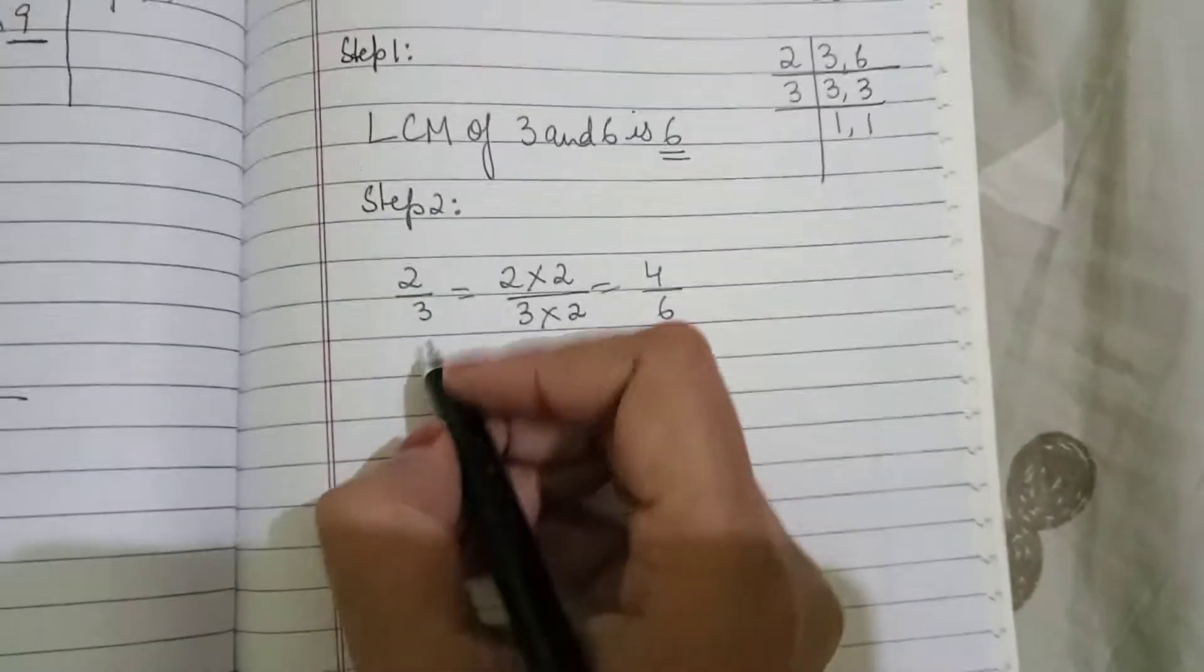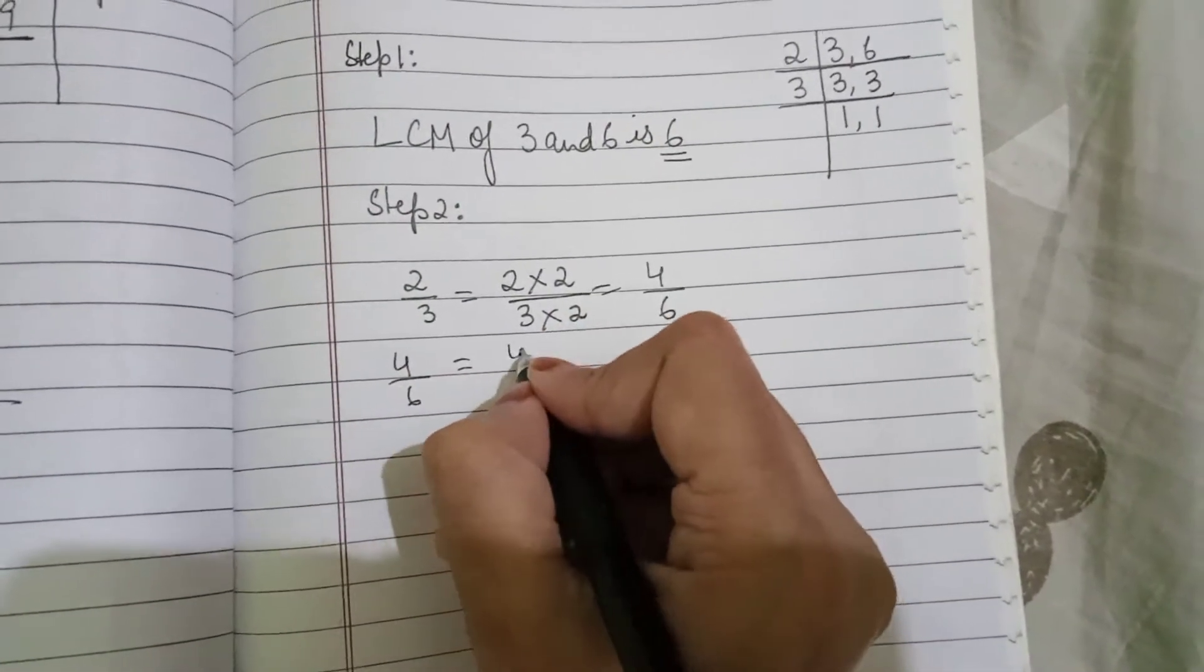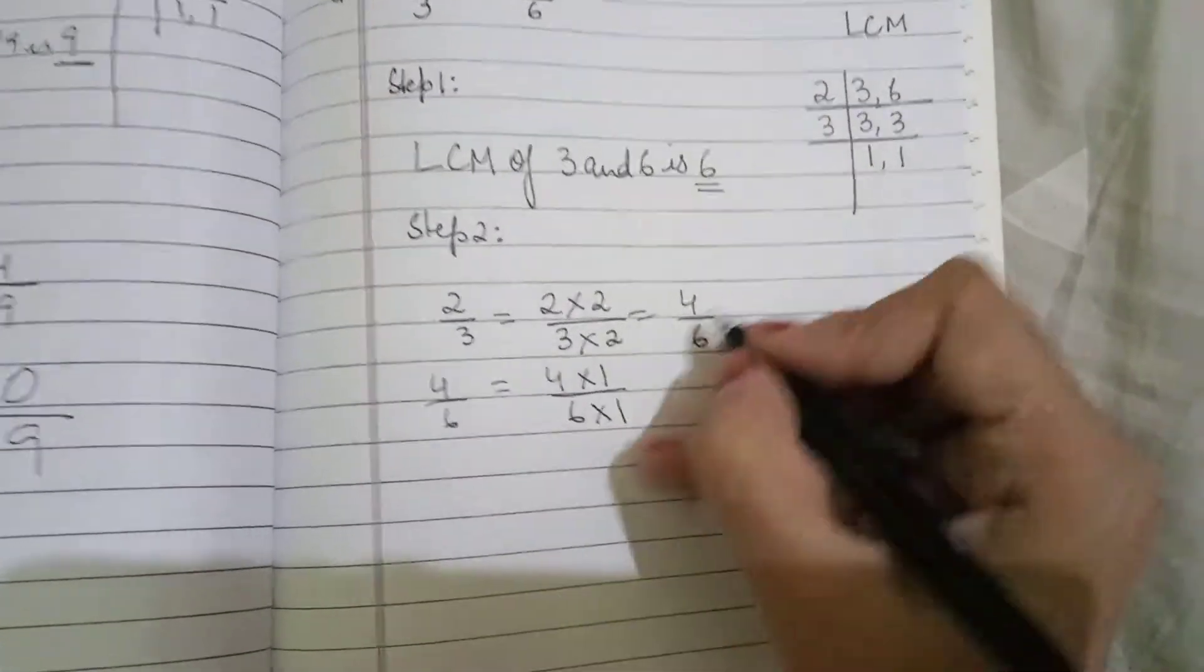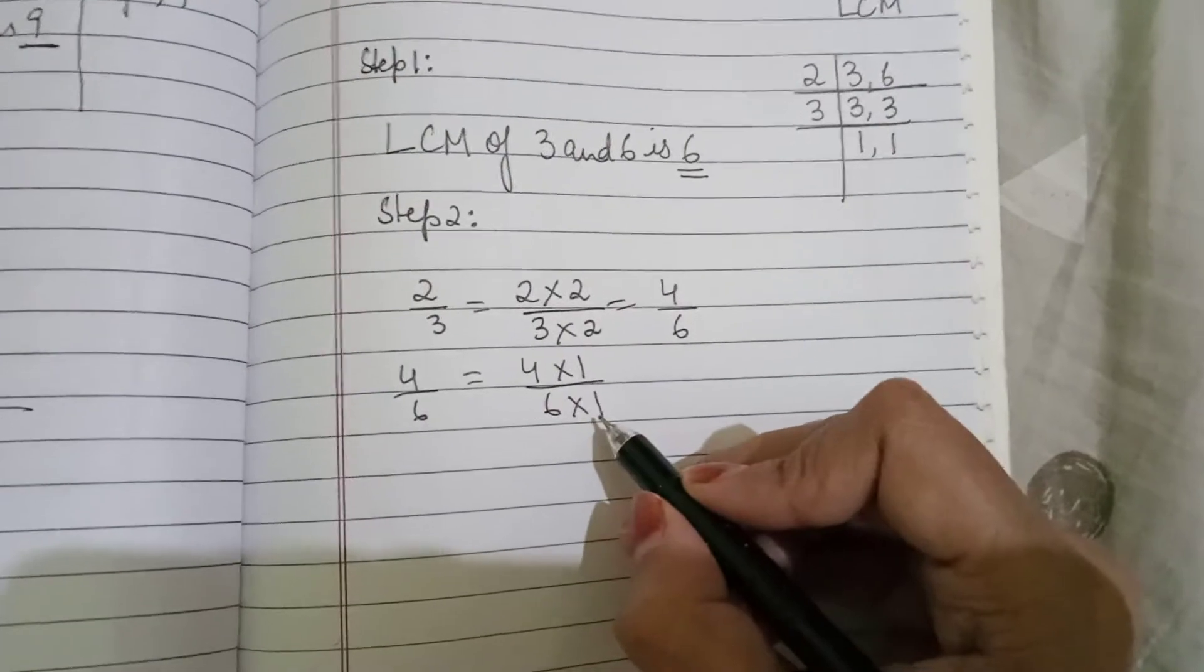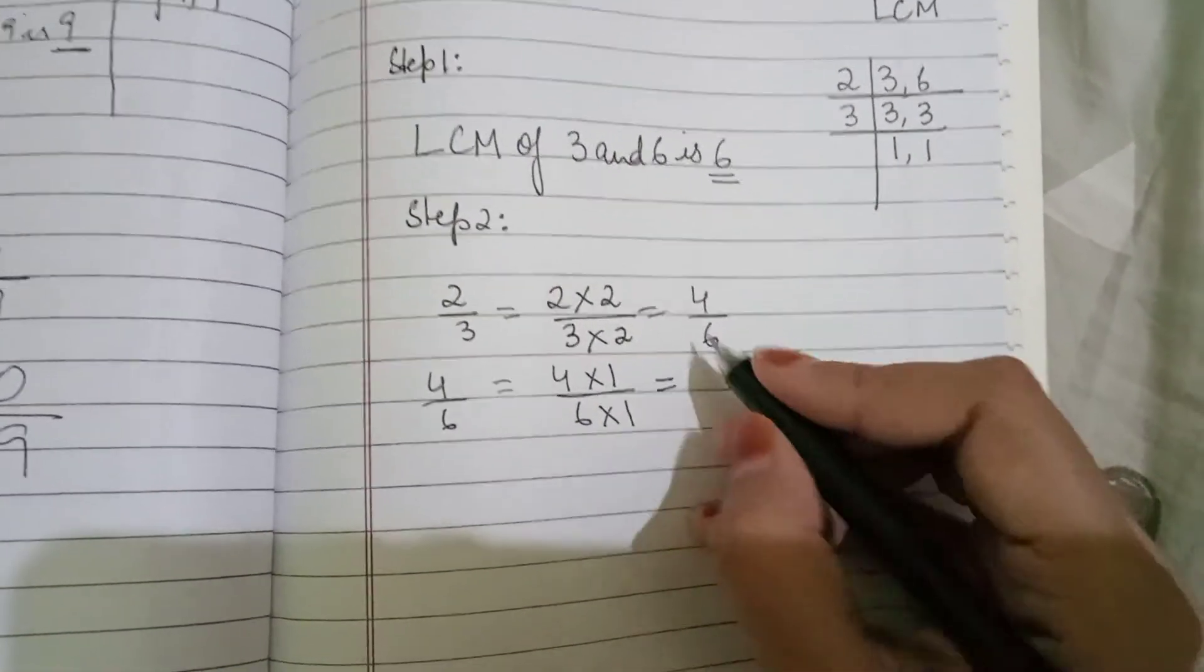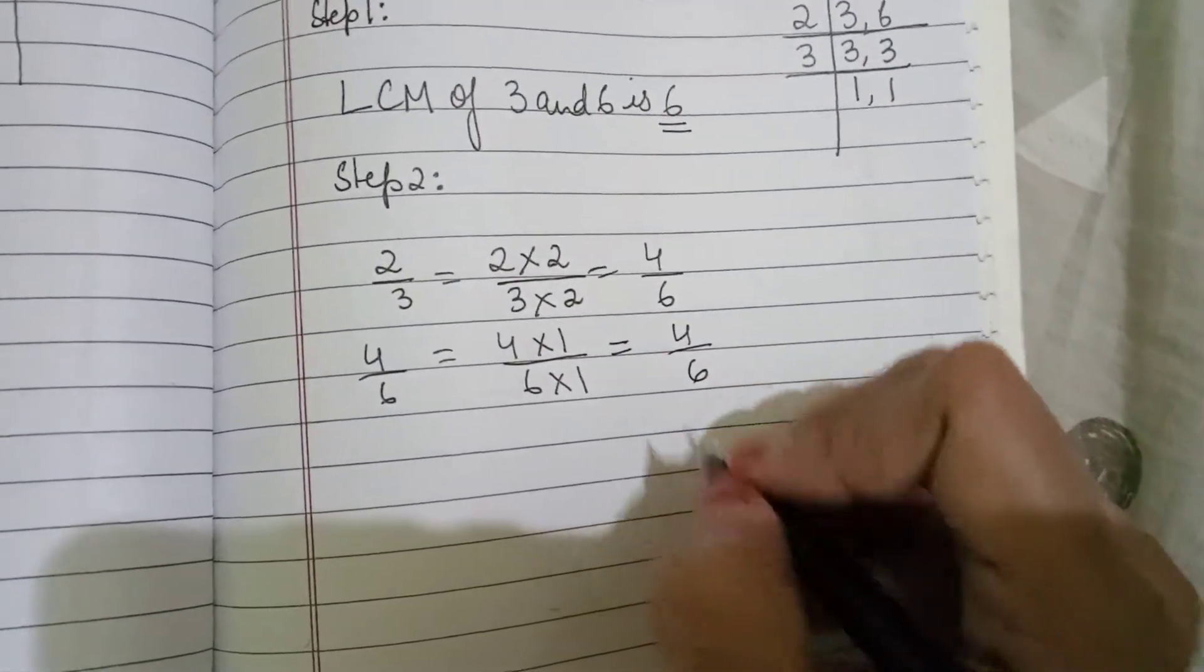We will do the same for 4 by 6 also. 4 upon 6 is equal to, 6 will go 1 time. Why? Because the number of times we are multiplying the denominator, the same number of times we are going to multiply the numerator. So, answer becomes 4 upon 6.